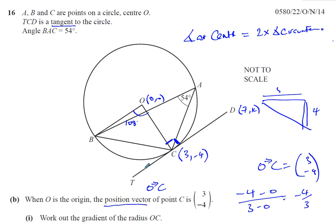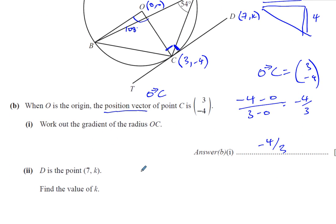I know the gradient of OC is -4/3. I know that the tangent is perpendicular to the radius, they meet at 90 degrees. Therefore, the gradient of the tangent, which C to D is part of, must be related to the gradient of the radius because they are perpendicular. With perpendicular lines, the gradients are negative reciprocals. The gradient of the line from C to D is going to be 3/4.